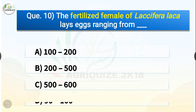Question number ten: The fertilized female of Laccifer lacca lays eggs ranging from dash. The options are 100 to 200, 200 to 500, 500 to 600, or 90 to 100. The correct answer is option B — 200 to 500. So the fertilized female of Laccifer lacca lays eggs ranging from 200 to 500.